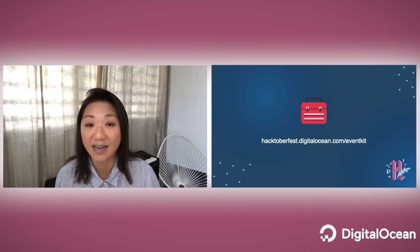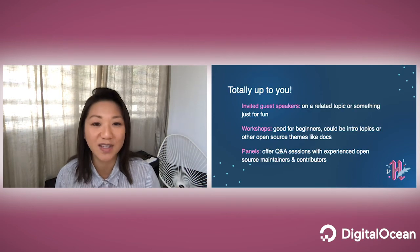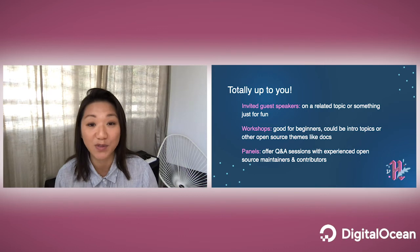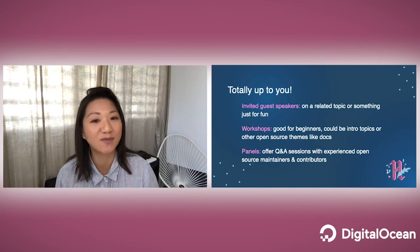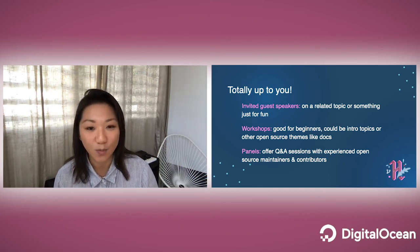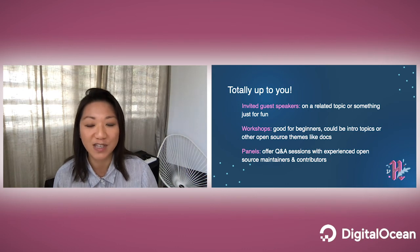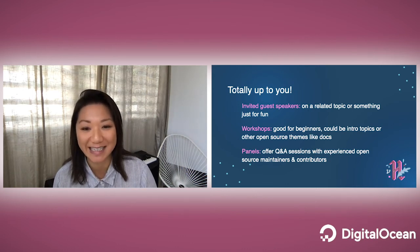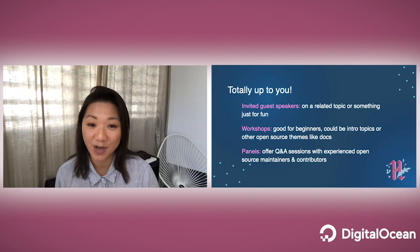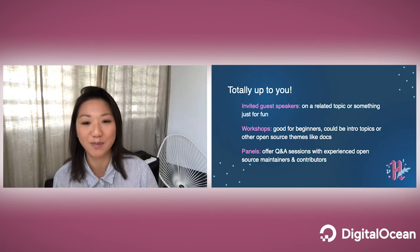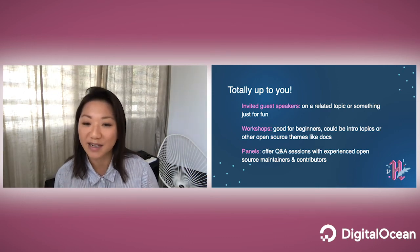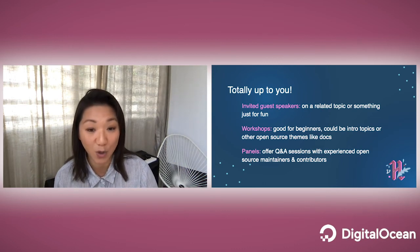Here are some types of content you might consider adding to your event. Invited guest speakers are great if you plan to have a short opening talk and potentially want a well-known speaker to help draw attendees — this could be a Hacktoberfest-related talk or something just for fun. Workshops are particularly important for beginners: things like an intro to Git and GitHub or a good first-time pull request are great resources. You can also include workshops on other open source topics like documentation, triaging issues, or creating pull request templates for your repo. And panels — sometimes it can be good to have a Q&A session with an experienced open source maintainer about their experience working with open source software.